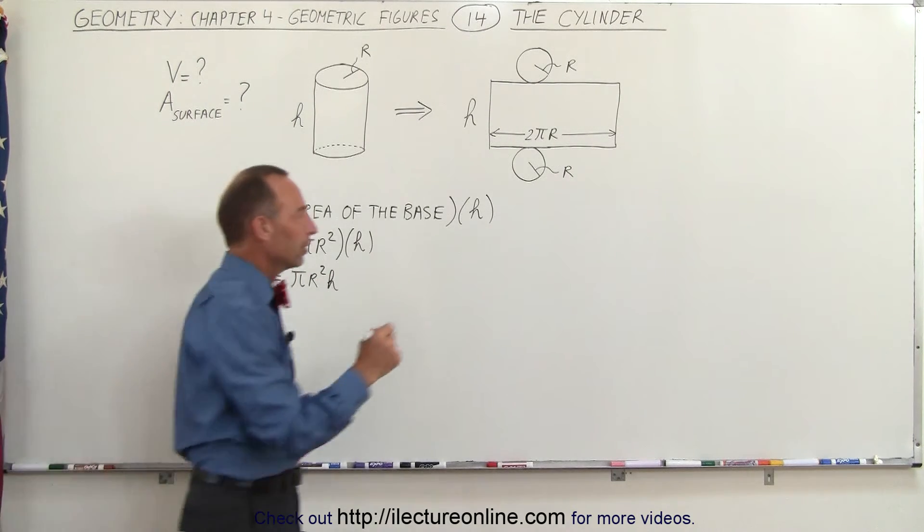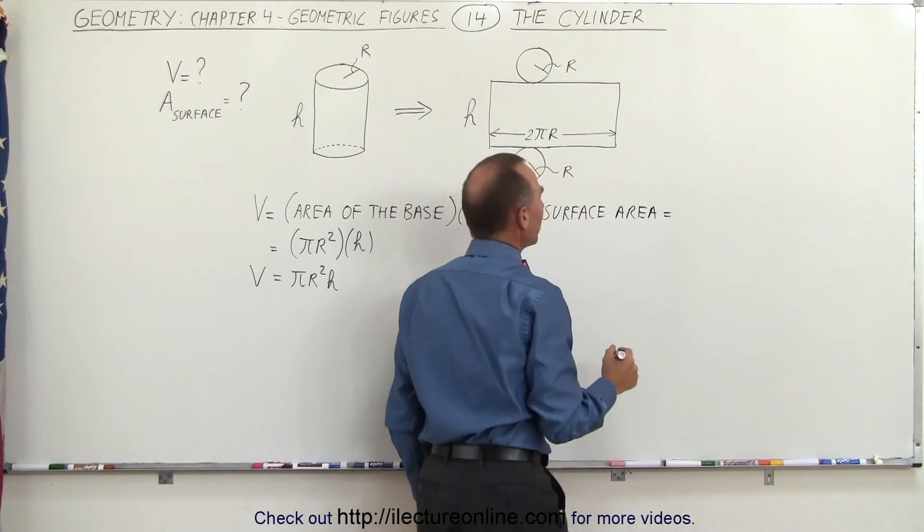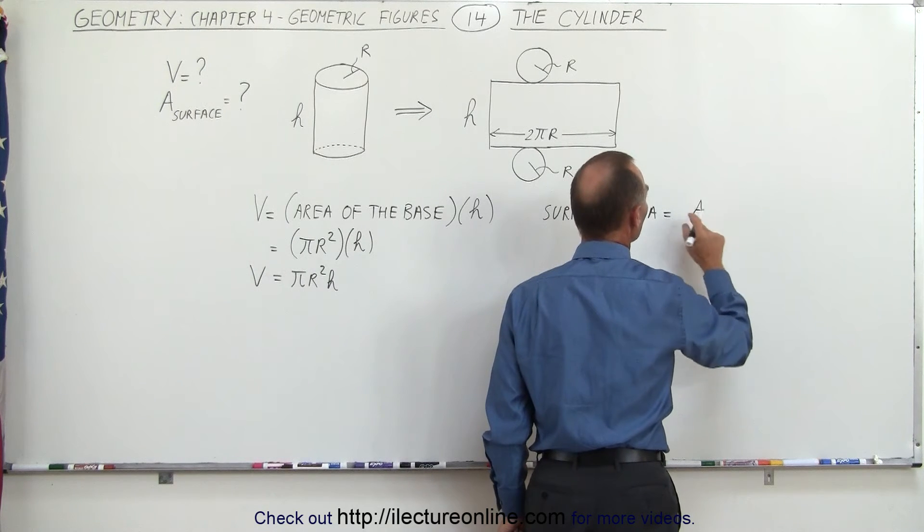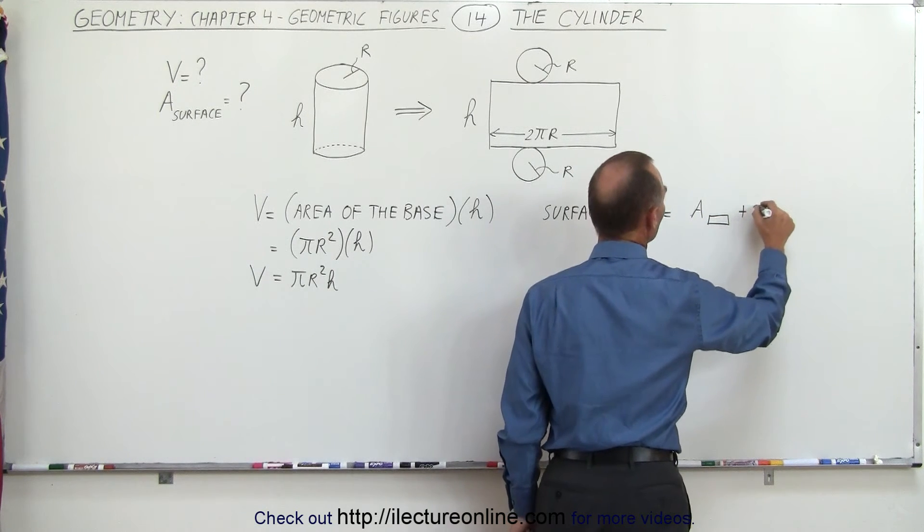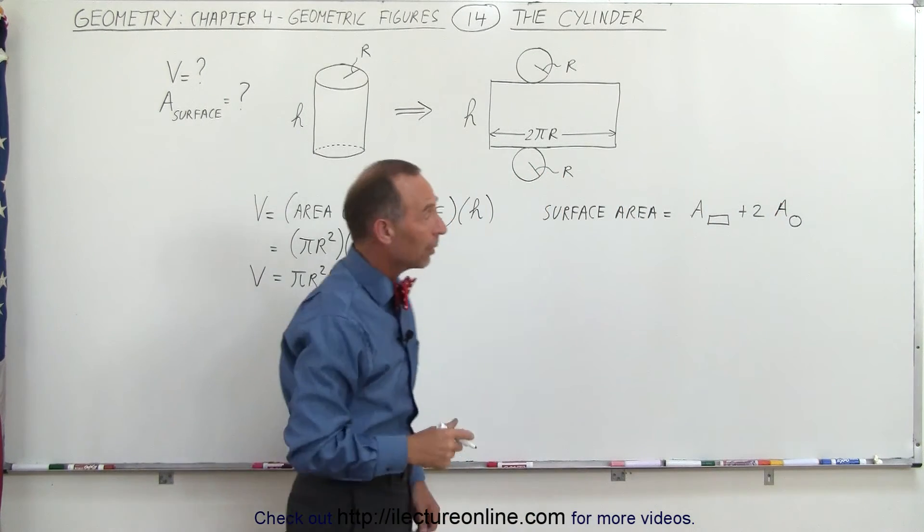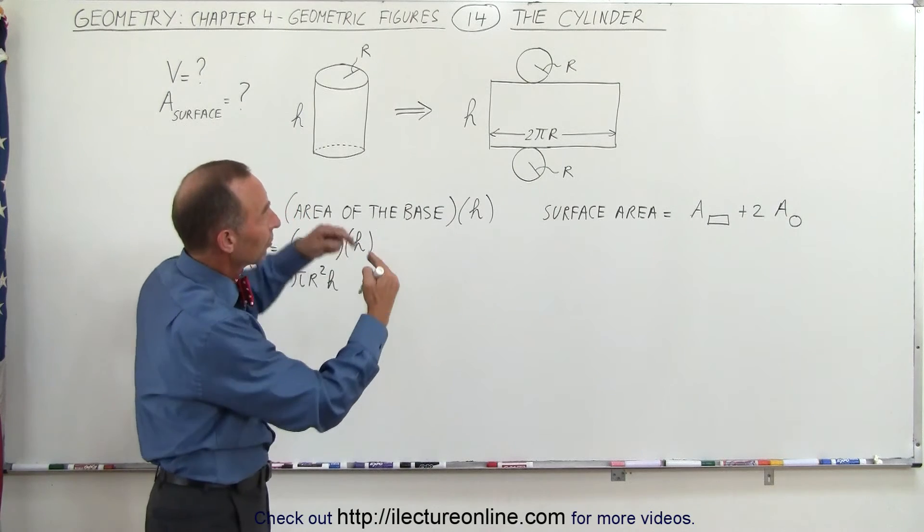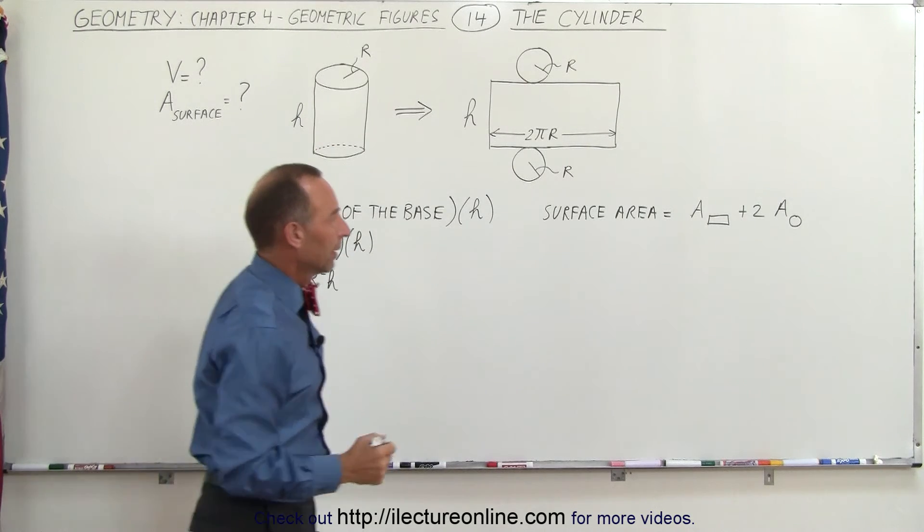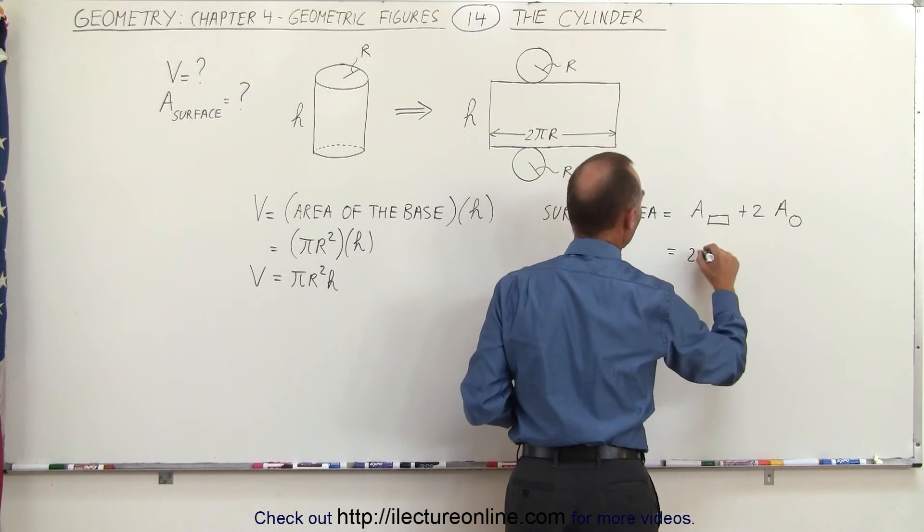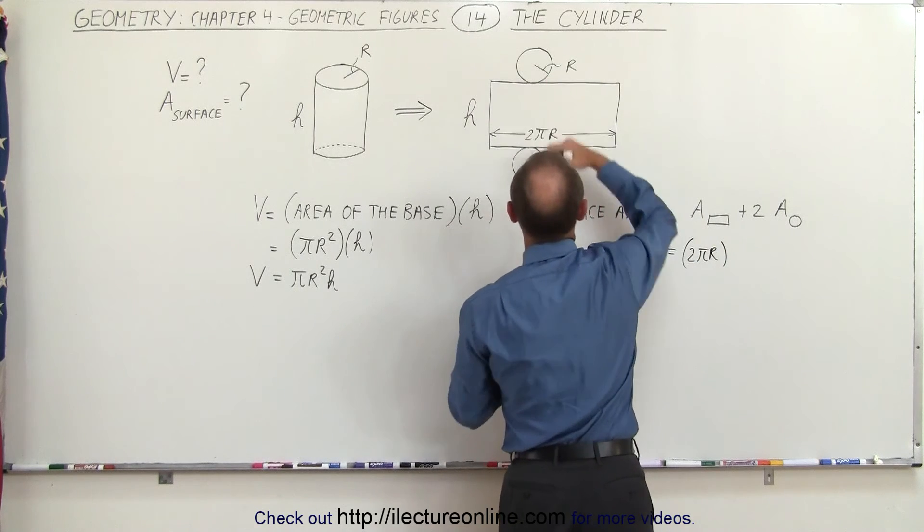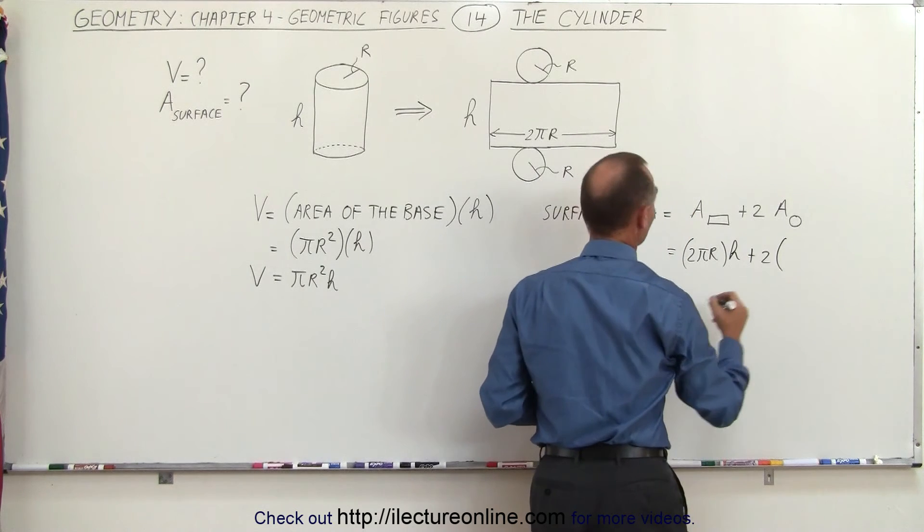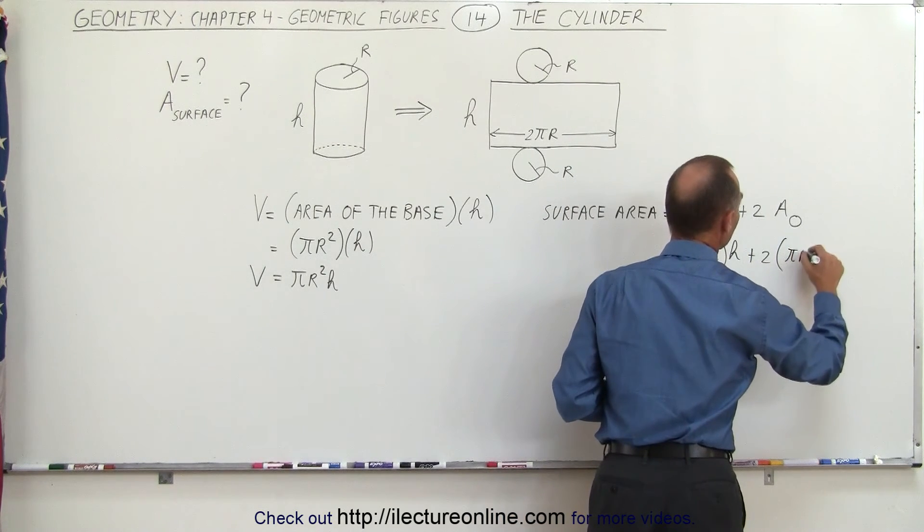Now to find the surface area, that would be equal to the sum of the area of the rectangle, and I'll just denote it like this, the area of the rectangle, plus two times the area of the circle, either the top or the bottom, multiply that by two, because essentially we have two of them. The area of the rectangle would be equal to the length times the width. The length would be 2πr, and the width would be the height of the cylinder, which would be h, plus two times the area of the circle, which would be πr².